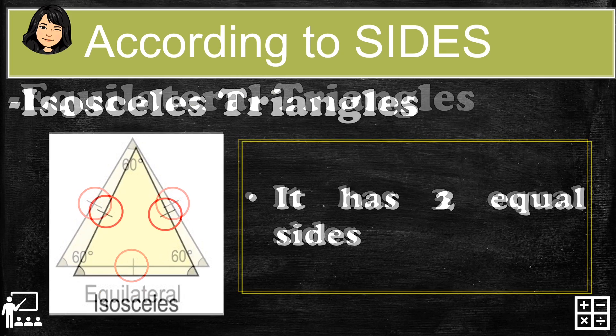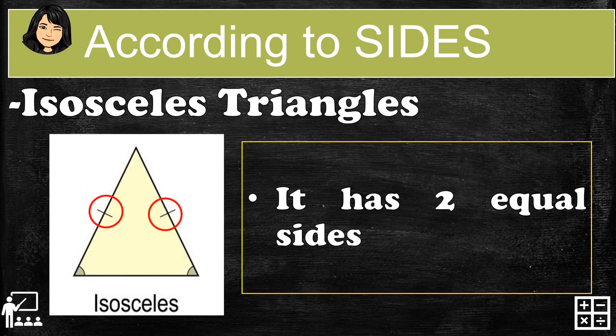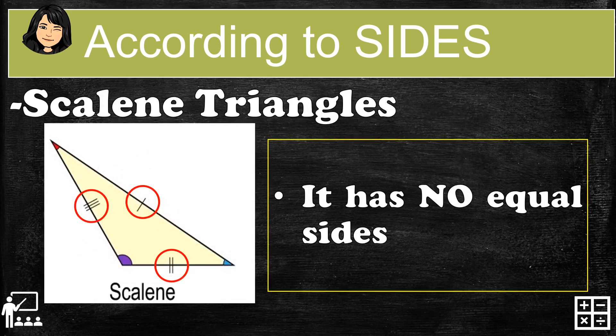Next is the isosceles triangle. As you can see on the image, it has only two equal sides — the bottom part and one other side have different measurements, and just the two sides are equal.